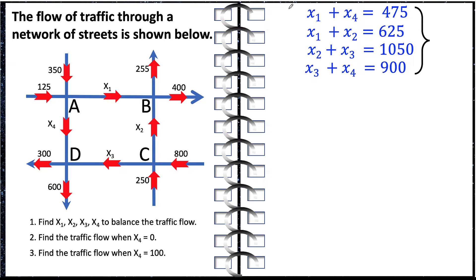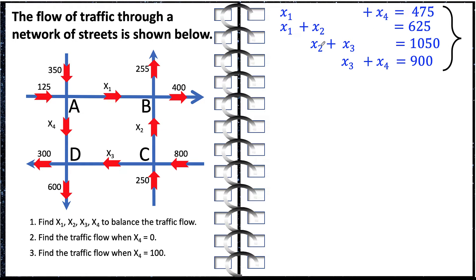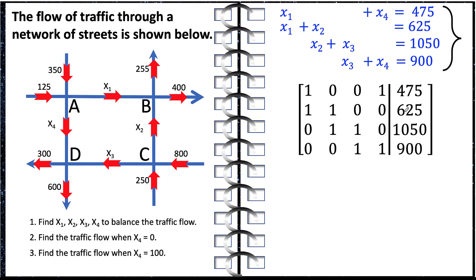Let's solve this system simultaneously by lining up the same variables: x1, x2, x3, and x4. This is a system of linear equations in four unknowns and four equations. To solve this, we can use matrices — in particular, we are going to use Gauss-Jordan reduction. Let's convert this into an augmented matrix. The coefficients for the first equation are 1, 0, 0, 1, giving us the first row with 475 on the right side. The second row is 1, 1, 0, 0 with 625. The third row is 0, 1, 1, 0 with 1050. And the fourth row is 0, 0, 1, 1 with 900.